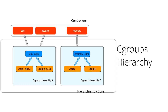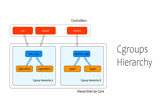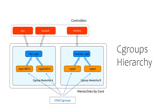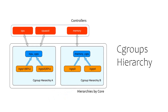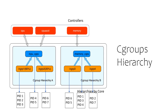The core is responsible for establishing and maintaining the hierarchy, and the controllers are attached to the hierarchies and responsible for distributing a specific type of resource along the hierarchy. The controllers are also called subsystems. Cgroup hierarchies are realized by creating child cgroups under the root cgroup. The cgroups in the hierarchy are also called nodes. Each node in a cgroup hierarchy contains a set of processes, and their resource utilization is limited by the resources allocated to that node.